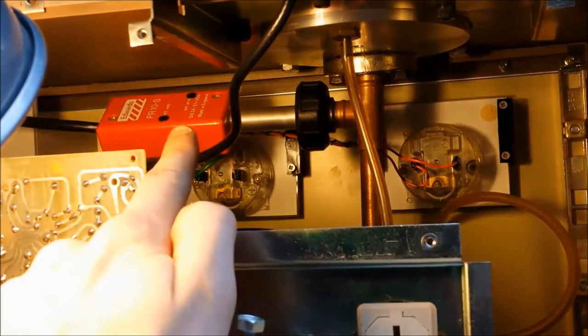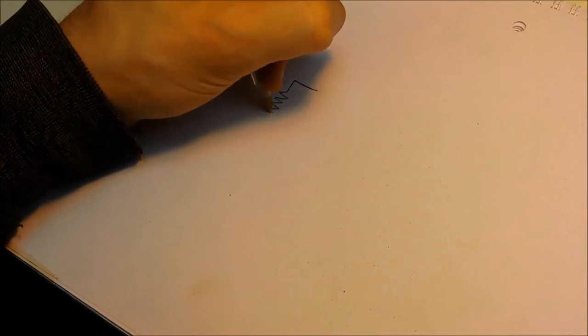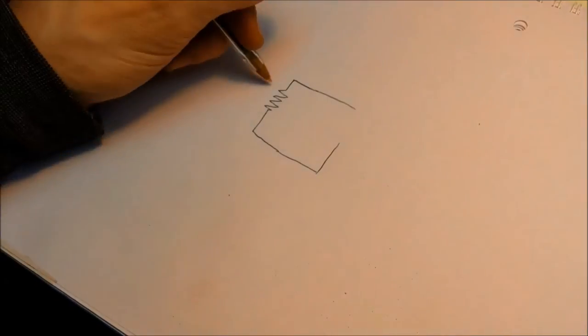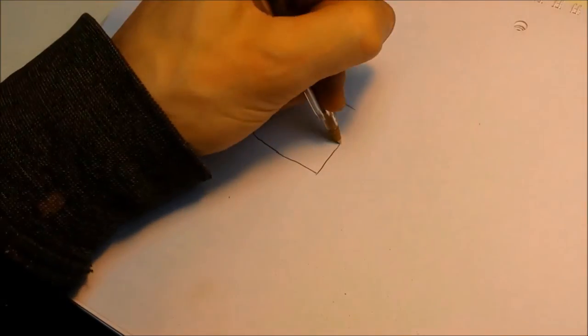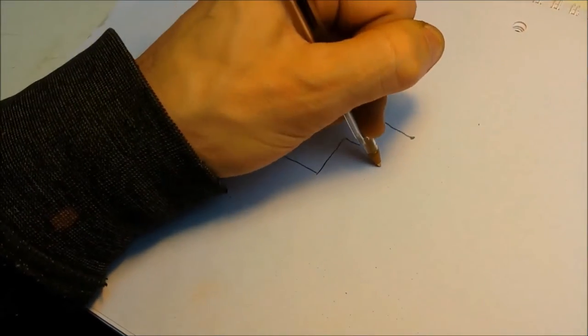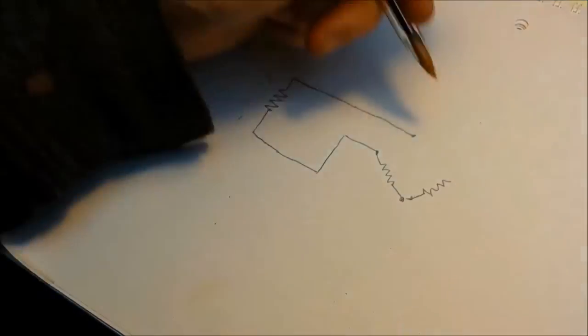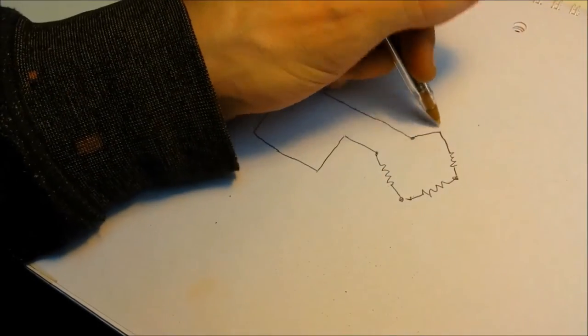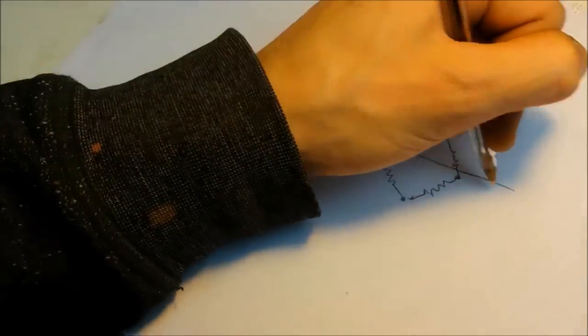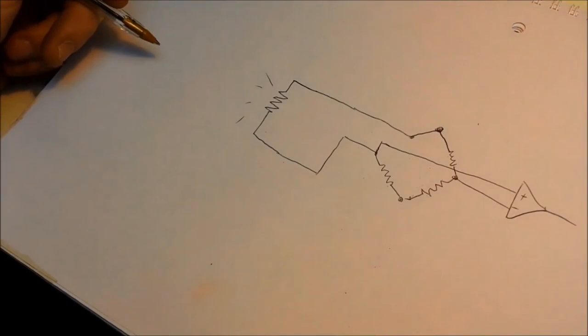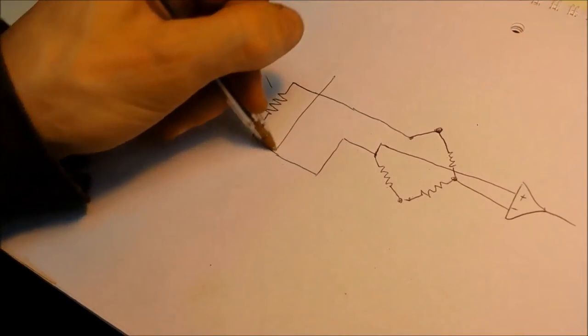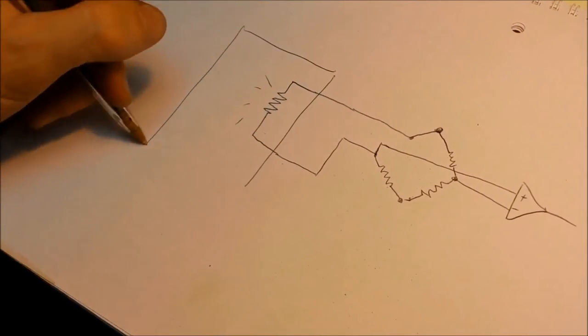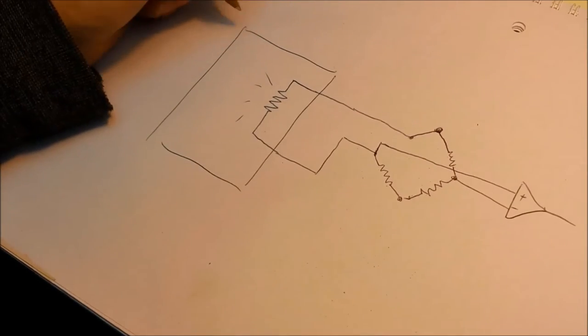The pirani gauge achieves this by looking at the rate of power dissipation from the resistor that is suspended in a vacuum. As the pressure goes down, the ability for the gas to remove heat from the resistor also decreases. So you can make an indirect measure of the pressure. I'm sort of oversimplifying. But I have a broken pirani gauge that I've considered to fix up. If there's any interest, I could maybe do a video of it.